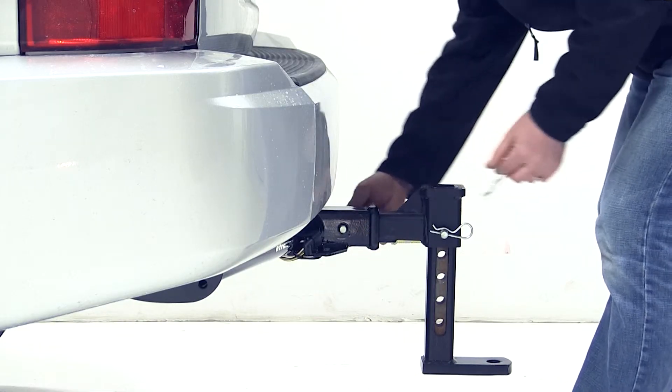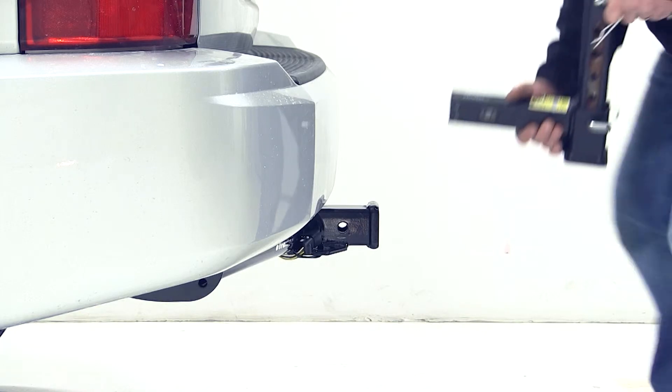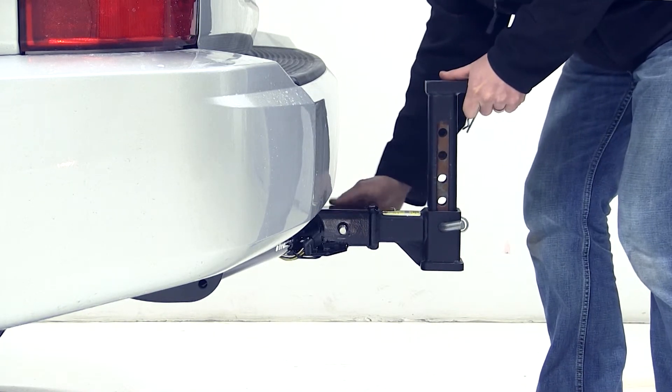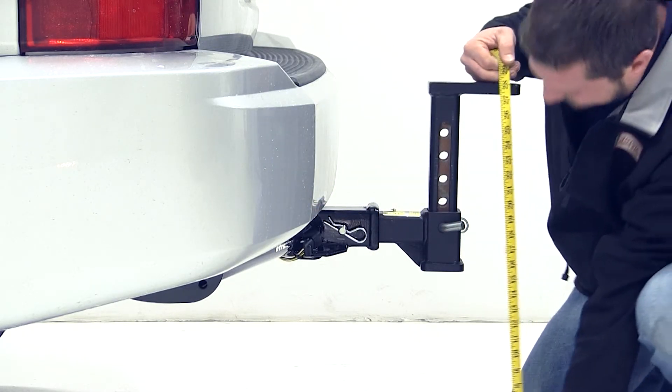We'll now flip the ball mount over into the full rise position. Now in the full rise position, our measurement from the top of the ball platform to the ground is 28.5 inches.